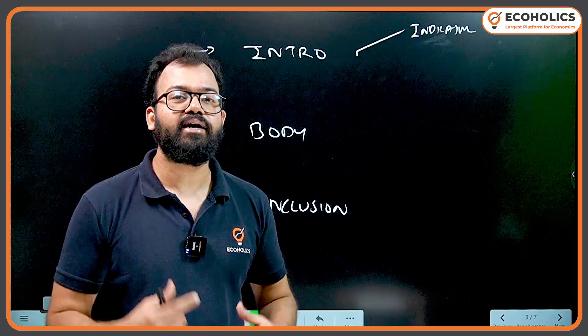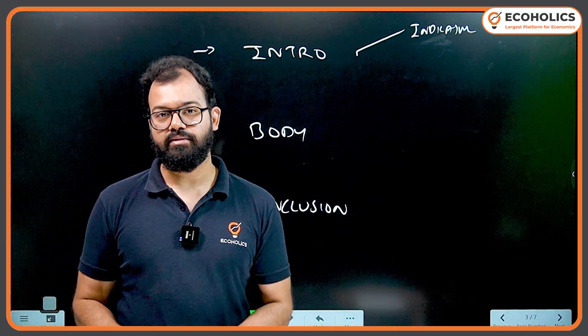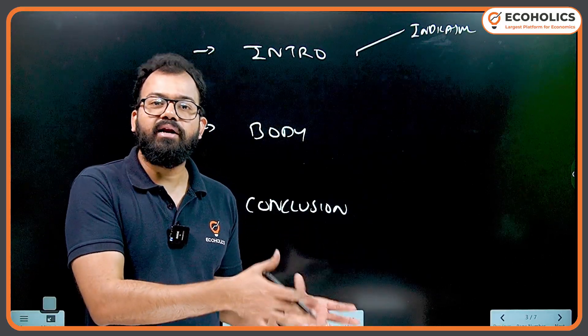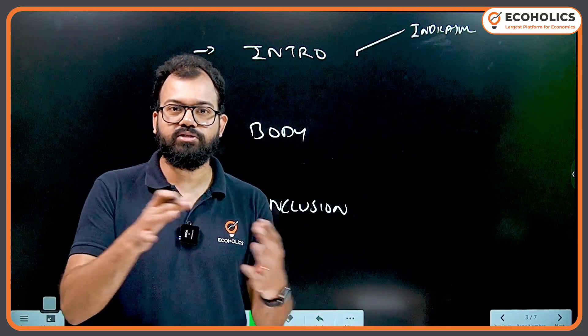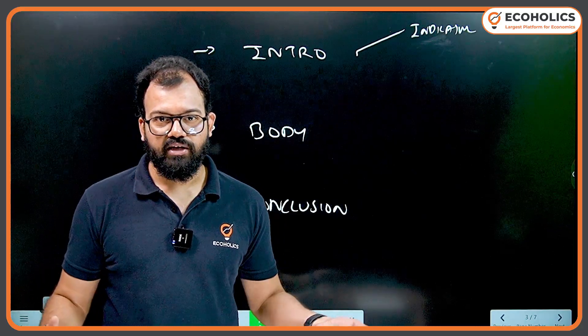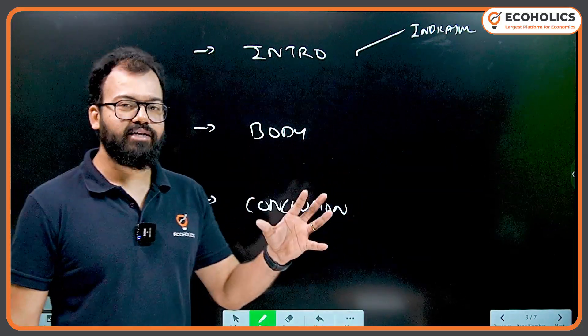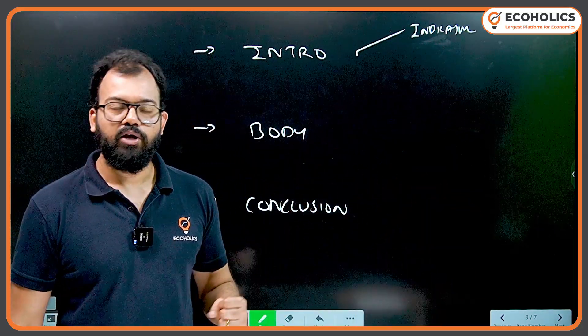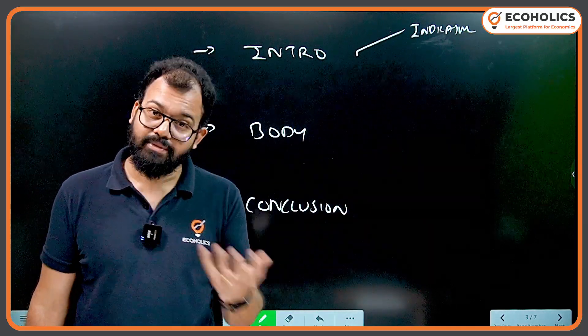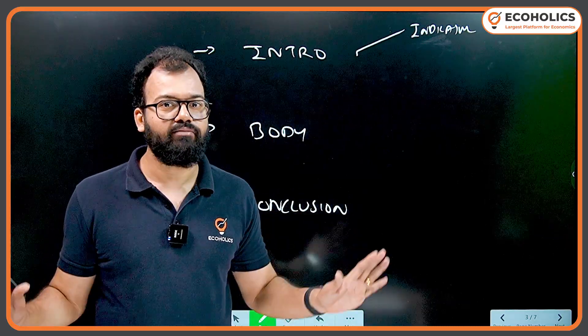This question gives you the context of MGNREGA successful in rural areas, but you don't have to put more focus on MGNREGA and rural areas. The question is all about curbing urban unemployment. In the introduction, you don't have to write yes, MGNREGA was successful, or yes it can be implemented in urban areas.